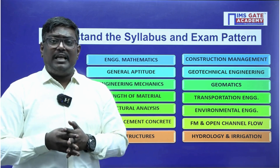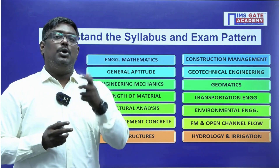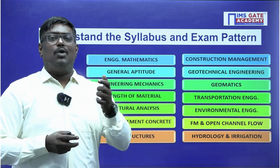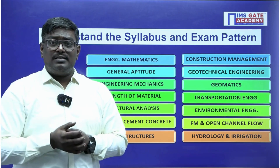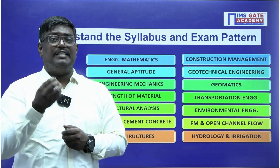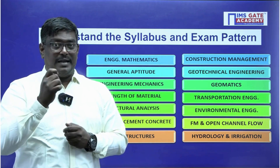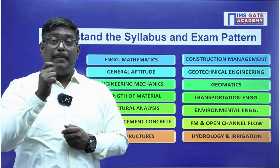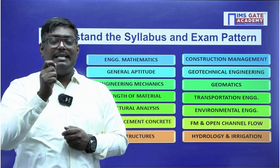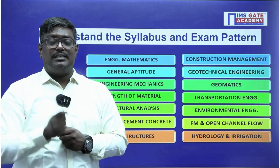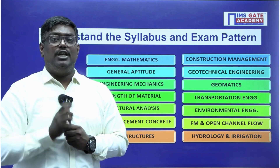If you consider engineering maths and aptitude, you will be getting around 28 marks. Some students might be facing challenges in steel structures. But in steel structures, if you concentrate on plastic analysis and eccentric connections, you will definitely get good marks in steel also.